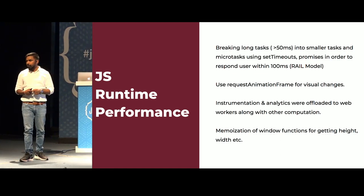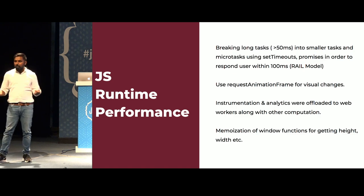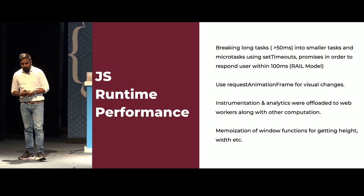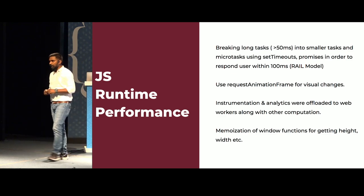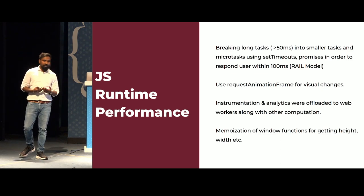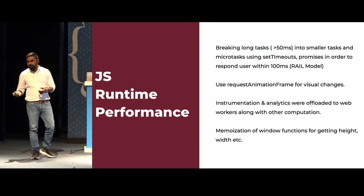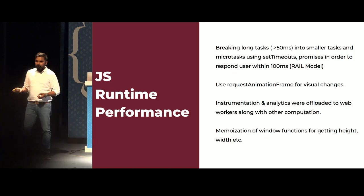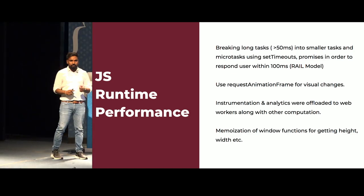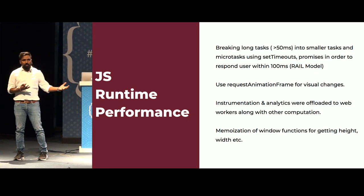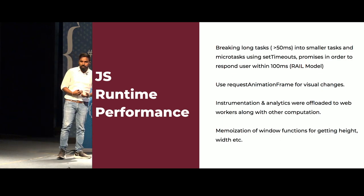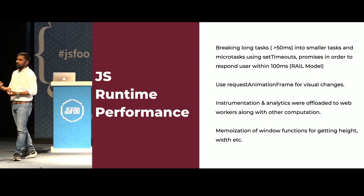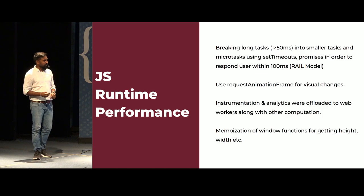We also memoized window functions. In our e-commerce application we show many images at different sizes and need to call window APIs to get viewport height and width for responsive images. Previously, we called these window functions every time we needed them, which was causing a lot of reflows. We started memoizing these functions — once called, all the required dimensions and window properties were saved to memory, and subsequent calls fetched values from memory. This is how we optimized JavaScript runtime performance.